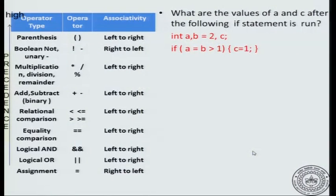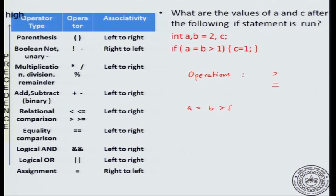If you have an expression of the form: if (a = b > 1) then c = 1, let us see what happens. The operations sorted by precedence: the greater than symbol has higher precedence over the equal to symbol. So the expression a = b > 1 will be evaluated as b > 1 first because that has higher precedence, and then a = (b > 1).